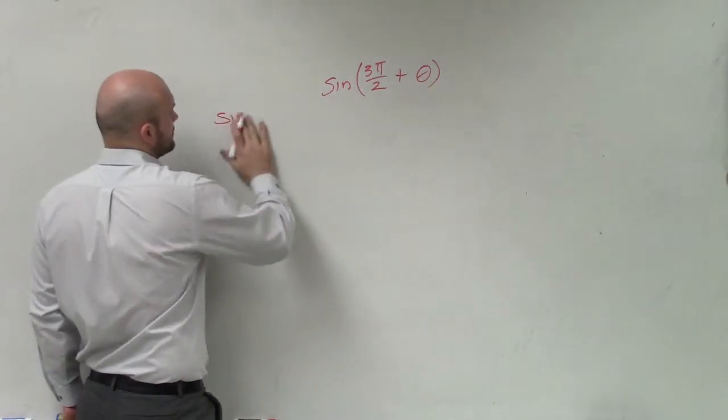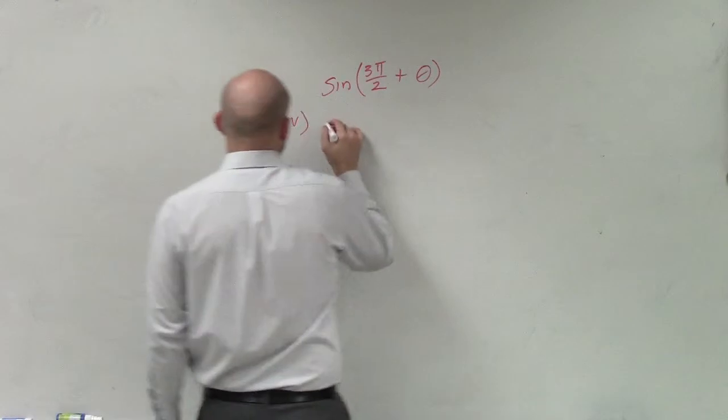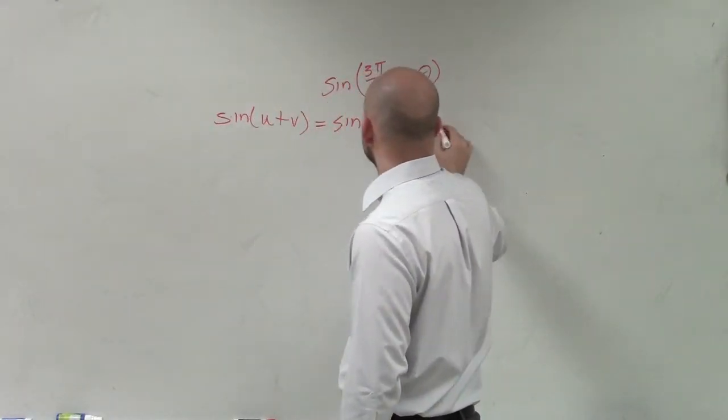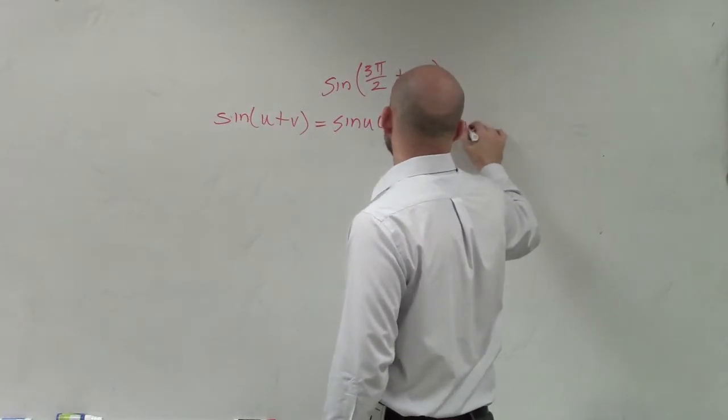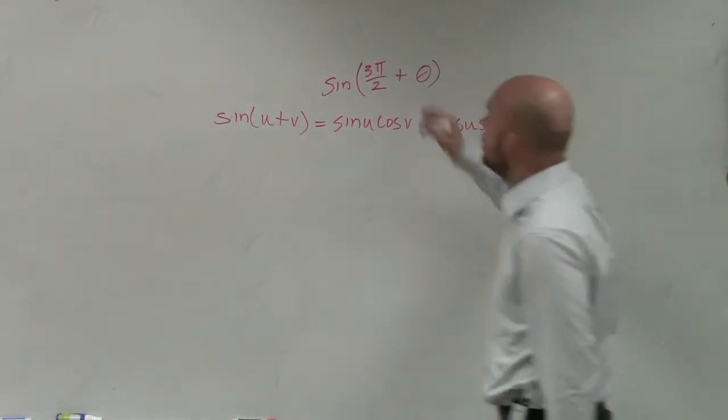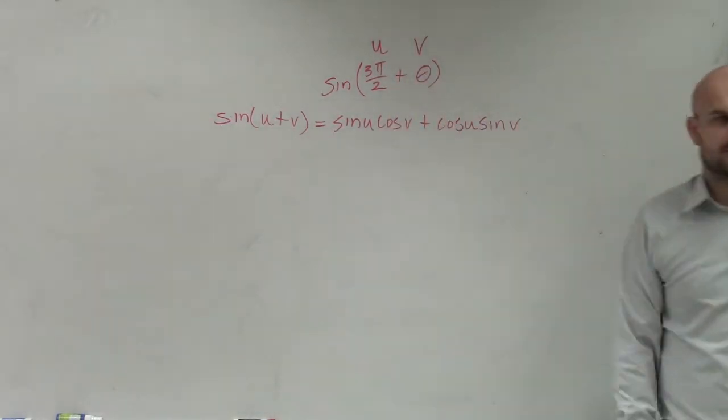So the sine of the sum of two angles, which we'll call u and v, equals the sine of u times the cosine of v plus cosine of u times sine of v. And I'm going to call this u and that v.